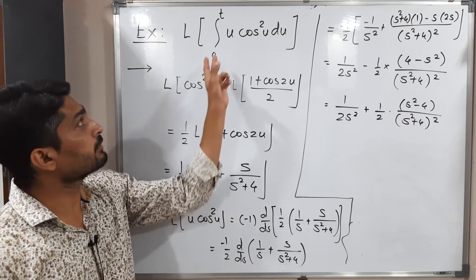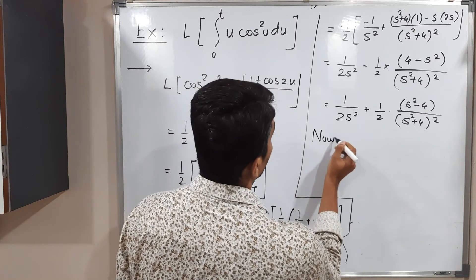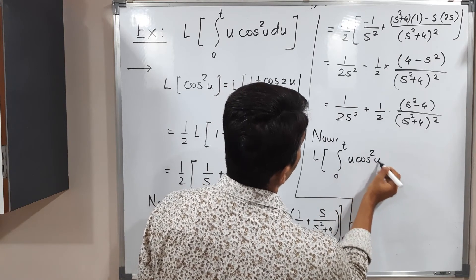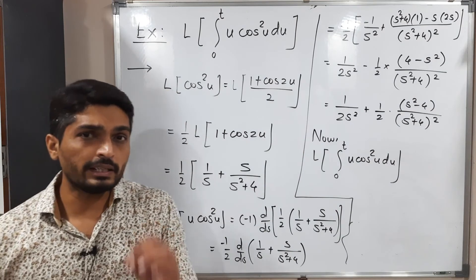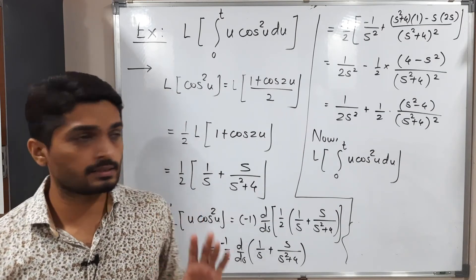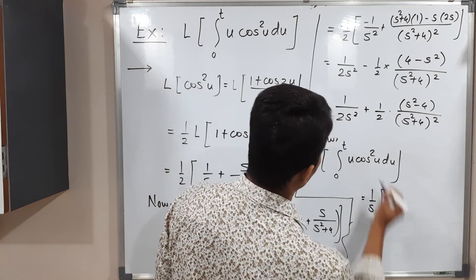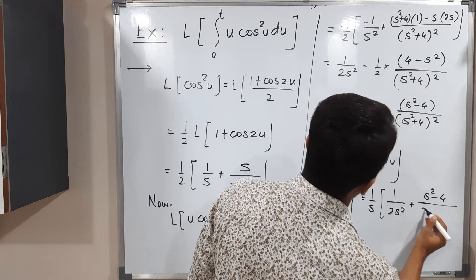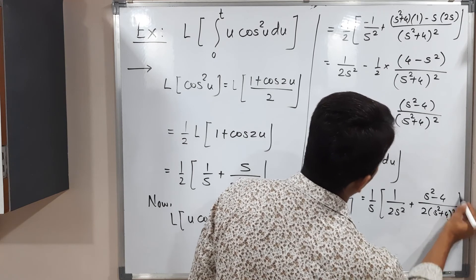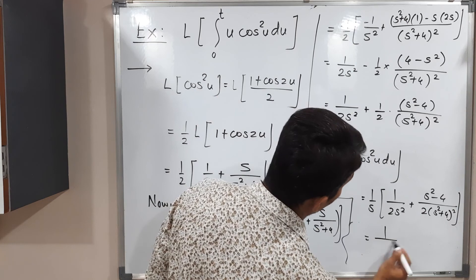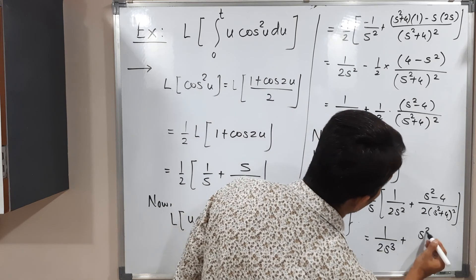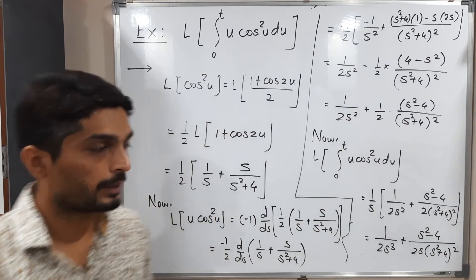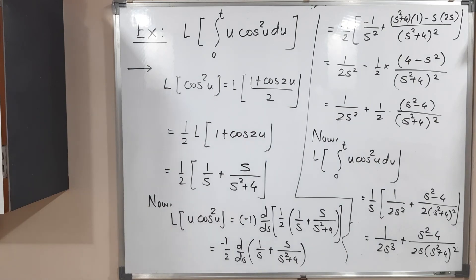Finally, for L{∫₀ᵗ u·cos²(u) du}, we use the integration formula: multiplying by 1/s. So the answer is (1/s) times our result: 1/(2s³) + (s² − 4) / [2s(s² + 4)²]. This is the required answer. Make a screenshot of it. Thank you, bye.